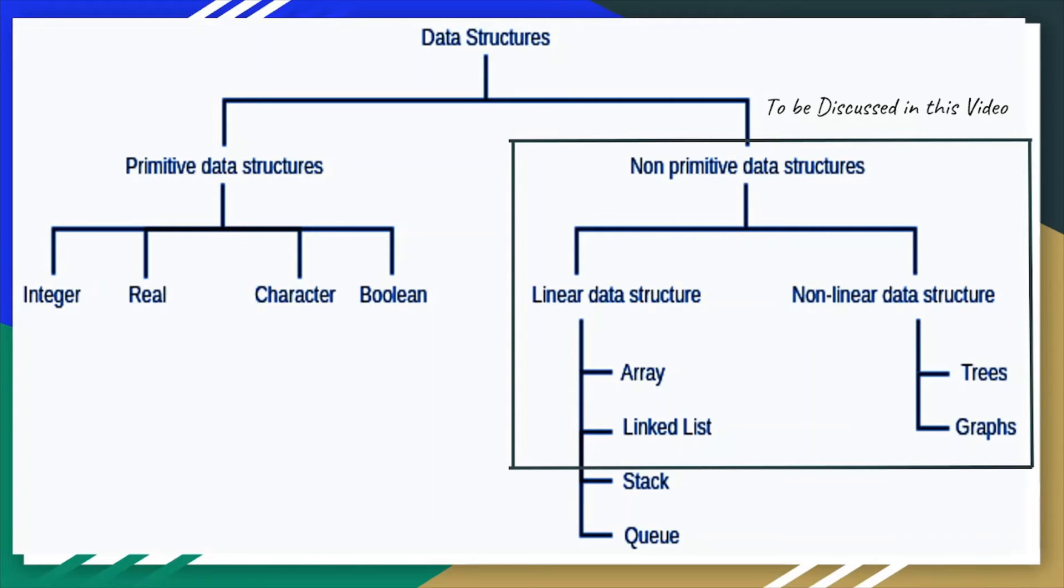Now non-linear data type. In this data type elements are not arranged in a sequential manner but rather the elements are connected to more than two elements which causes difficulty in accessing the data. More time is required to access the data. Trees and graphs come under non-linear data structure. Let's go through these data structures one by one.